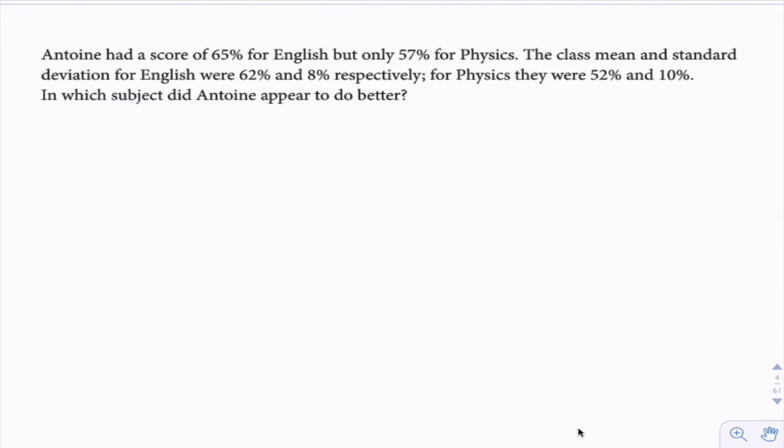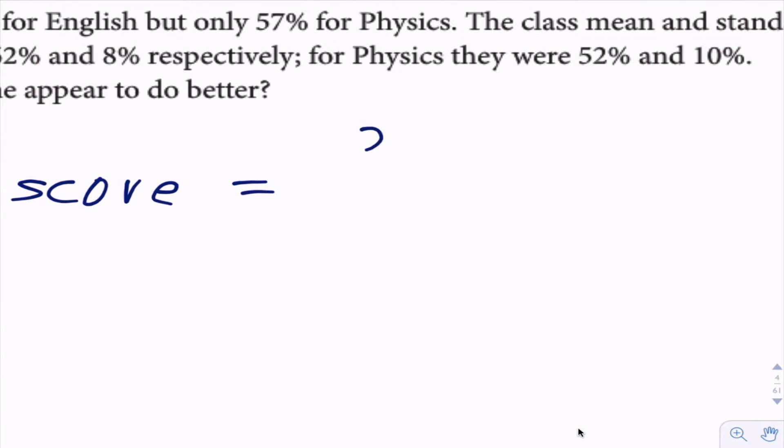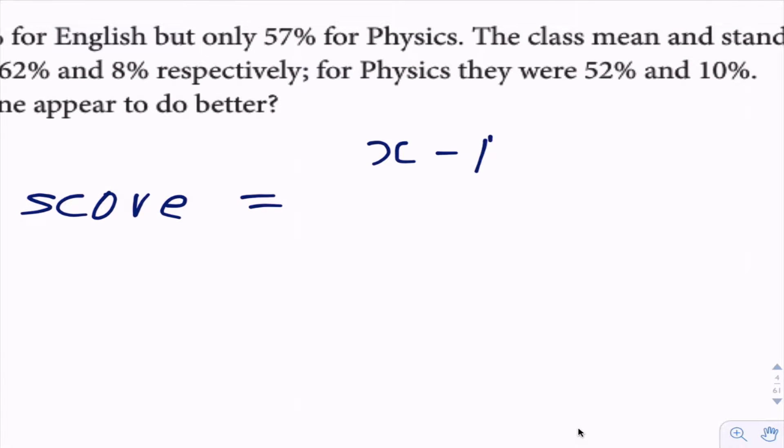So answering questions like this: if we got 65% English but only 57% physics, class means and standard deviations were that and that respectively, in which subject did Antoine appear to do better? It's not obvious just because he got better in English that he actually did better overall compared to the rest of the class. The way we're going to approach this is with a standard score - how many standard deviations above or below the mean a certain score is. The standard score is the value you got, subtract off the mean and divide by the standard deviation.